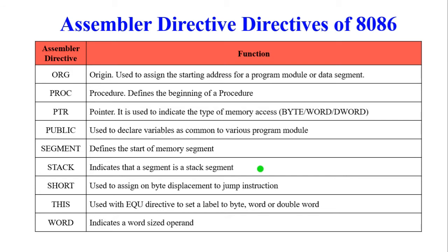Additional directives: ORG (origin) — assigns the starting address for a program module or data segment; PROC — defines the beginning of a procedure; PTR (pointer) — indicates the type of memory access: byte, word, or doubleword; PUBLIC — declares a variable as common to various program modules; SEGMENT — defines the start of a memory segment; STACK — indicates the segment is a stack segment; SHORT — assigns a byte of displacement to a jump instruction; WORD — indicates word size operand.